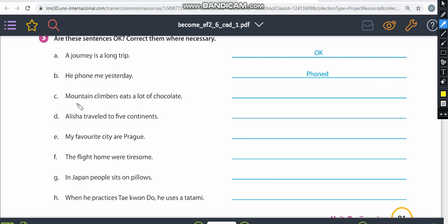This is letter C. Mountain climbers eat a lot of chocolate. I can't use eats because mountain climbers is a subject in the plural form. So you're going to replace eats to eat without the s, okay? Just eat. Alicia traveled to five continents. It's okay. No problems in this sentence. I'm going to do a check here, okay?